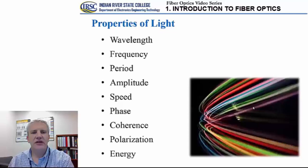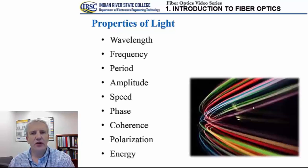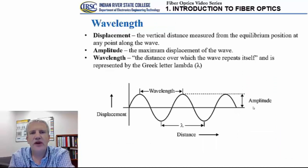This slide lists important parameters used to describe the properties of light. The most important are the wavelength, the frequency, the period, the amplitude, the speed of light, the phase, the coherence, the polarization, and the energy of light. On the slides that follow we will discuss each of these individually, as they play a very important role in photonics and fiber optics. Let's first talk about the wavelength.